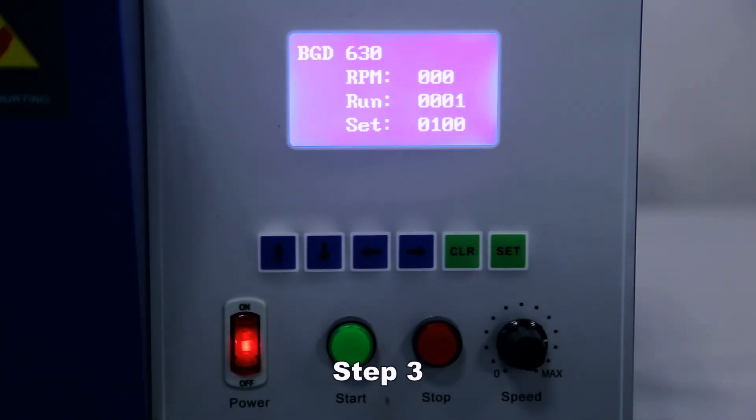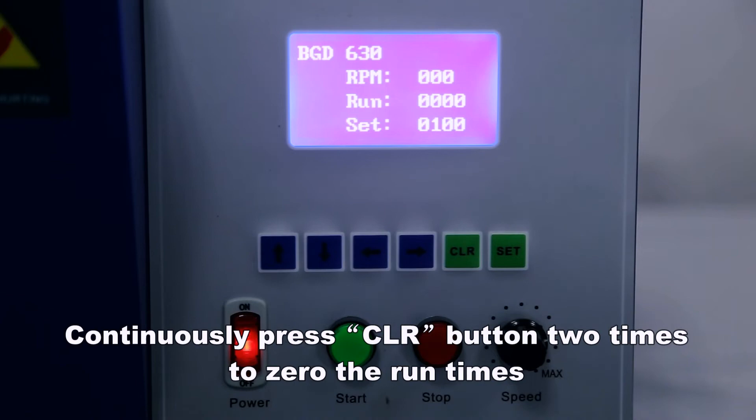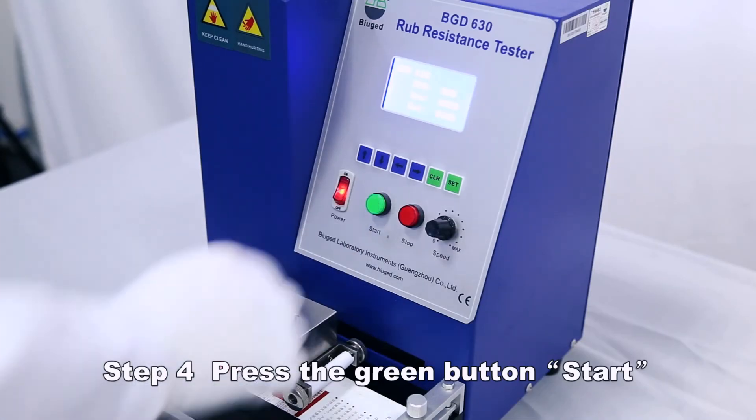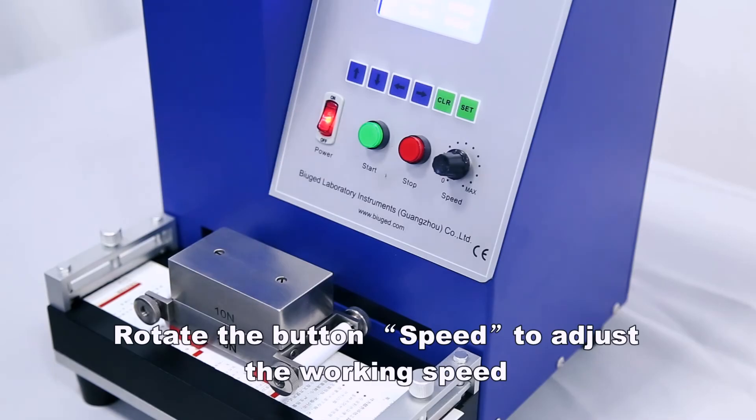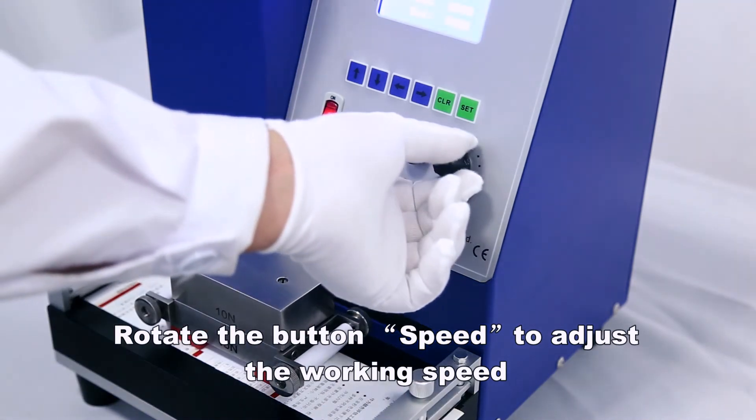Continuously press CLR button two times to zero the run times. Press the green button START and rotate the button speed to adjust the working speed.